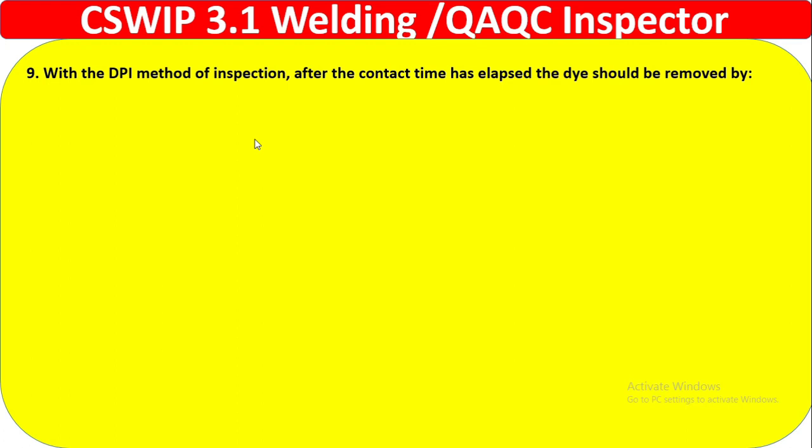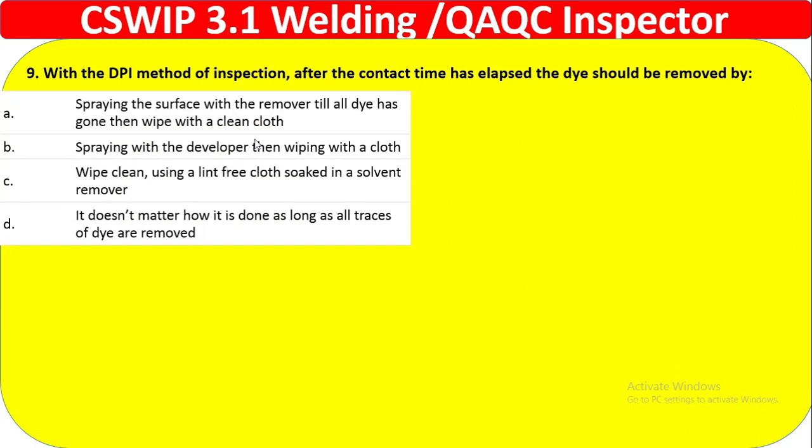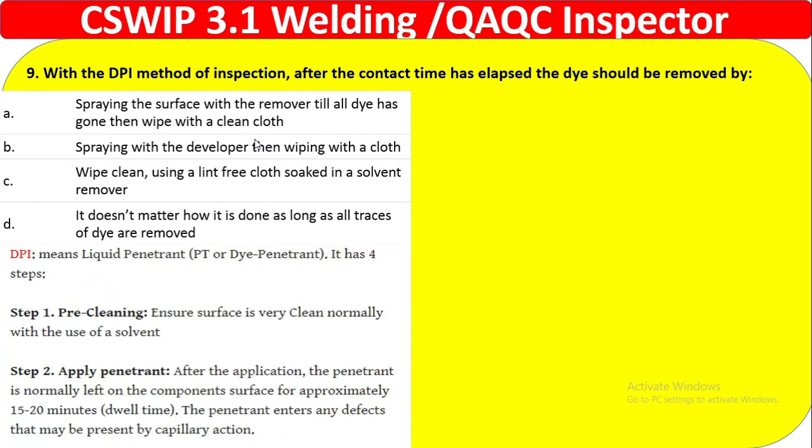Question 9: With the DPI method of inspection, after the contact time has elapsed, the dye should be removed by — option A: spraying the surface with remover until all dye is gone, then wipe with clean cloth. Option B: spraying with developer then wiping with cloth. Option C: wiping clean using a lint-free cloth soaked in solvent remover. Option D: it does not matter how it is done as long as all traces of dye are removed. We must follow the correct process and rules.